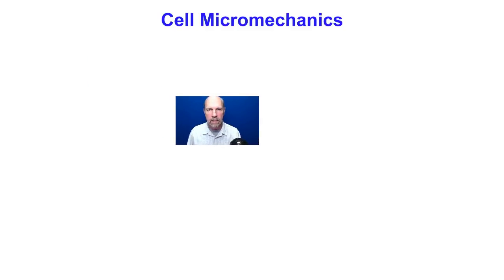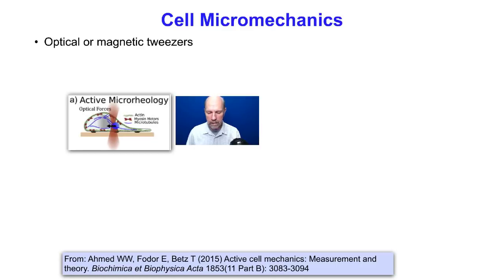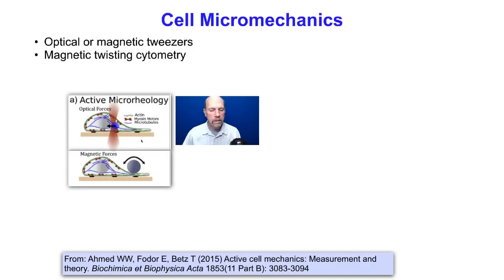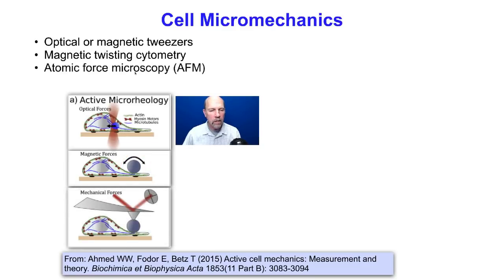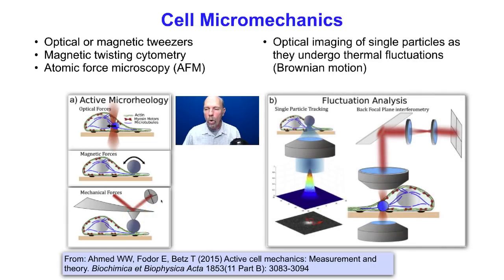Approaches to subcellular micromechanics we will study include optical or magnetic tweezer methods for applying forces to microspheres on or inside the cell, using magnetic beads to apply a twisting force to the membrane, using atomic force microscopy to apply indentation forces along the surface of a cell, and using optical imaging of single particles in or on the cell as they undergo thermal fluctuations or Brownian motion. That gives you a brief overview of the main topics we'll cover this quarter, and we'll discuss your questions in class.